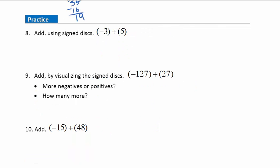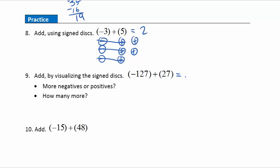Now it's time to check your understanding of adding positive and negative integers. Pause your video player and answer these questions; when you're done, hit play. Question eight: I have three negatives and five positives. Three pairs cancel out, leaving two positives — answer is positive two. Practice nine: we have more negatives — in fact, one hundred more negatives. Practice question ten: adding positives and negatives, we have more positives. Forty-eight minus fifteen gives thirty-three more positives.